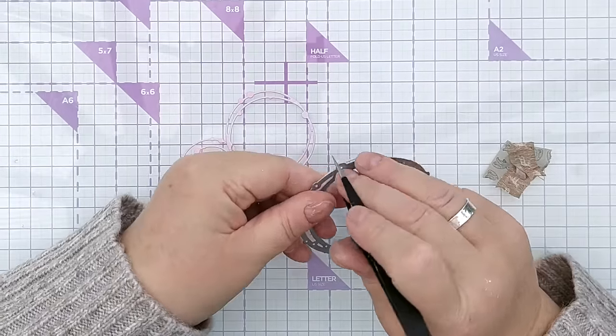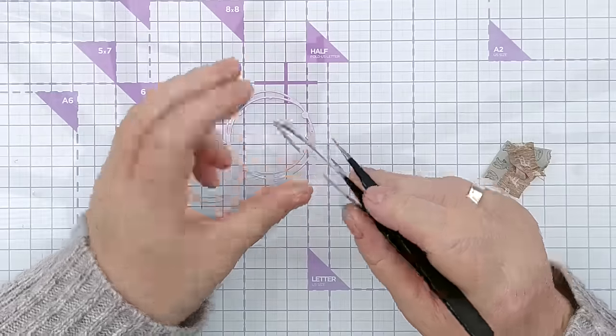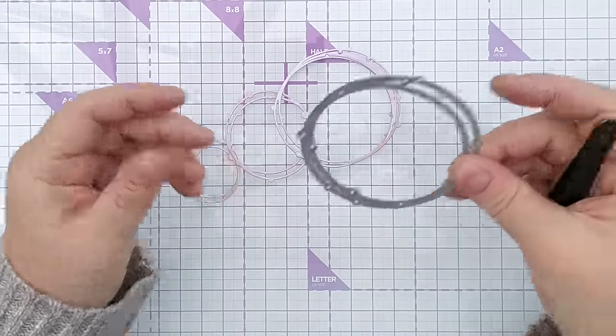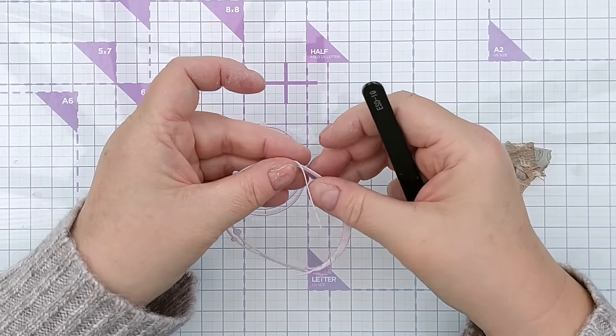All I'm doing is poking my tweezers through the little holes in the dies to pop the dies out a little bit, and then I run my tweezers between the die cut and the die very slowly and gently to ease the die cut out of the die.